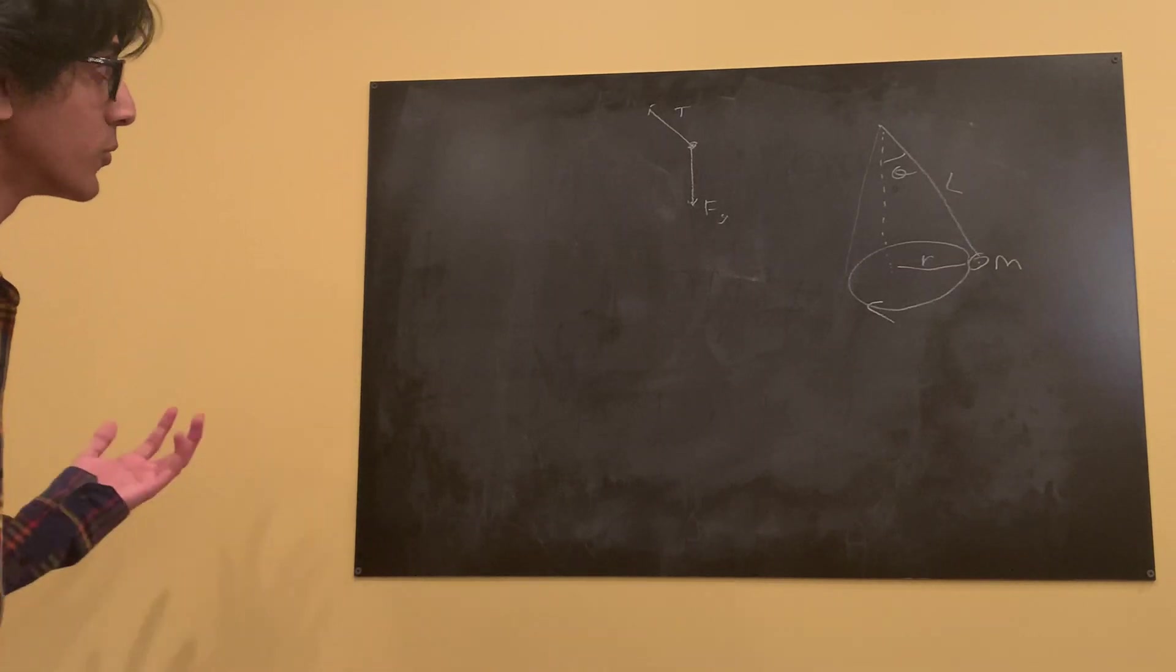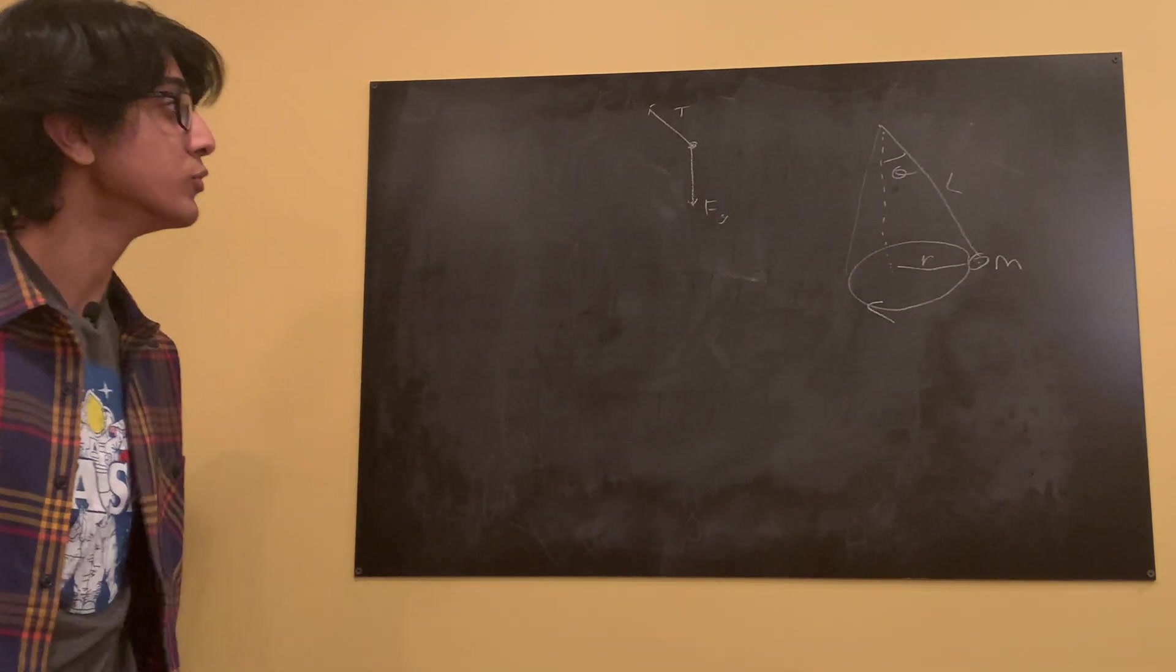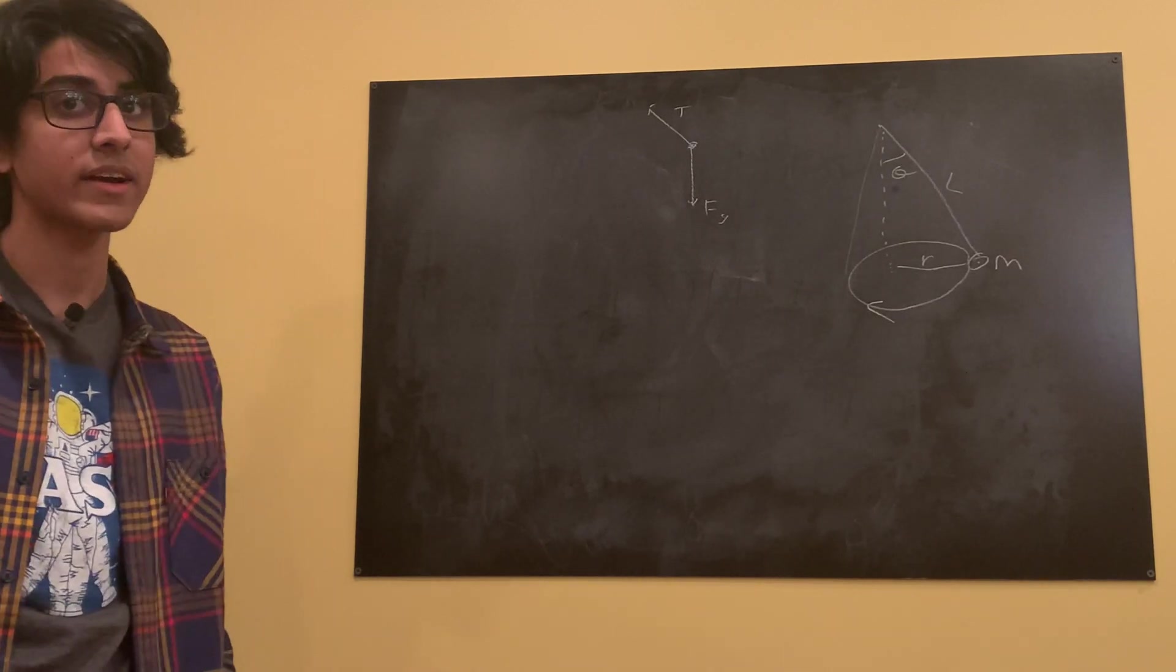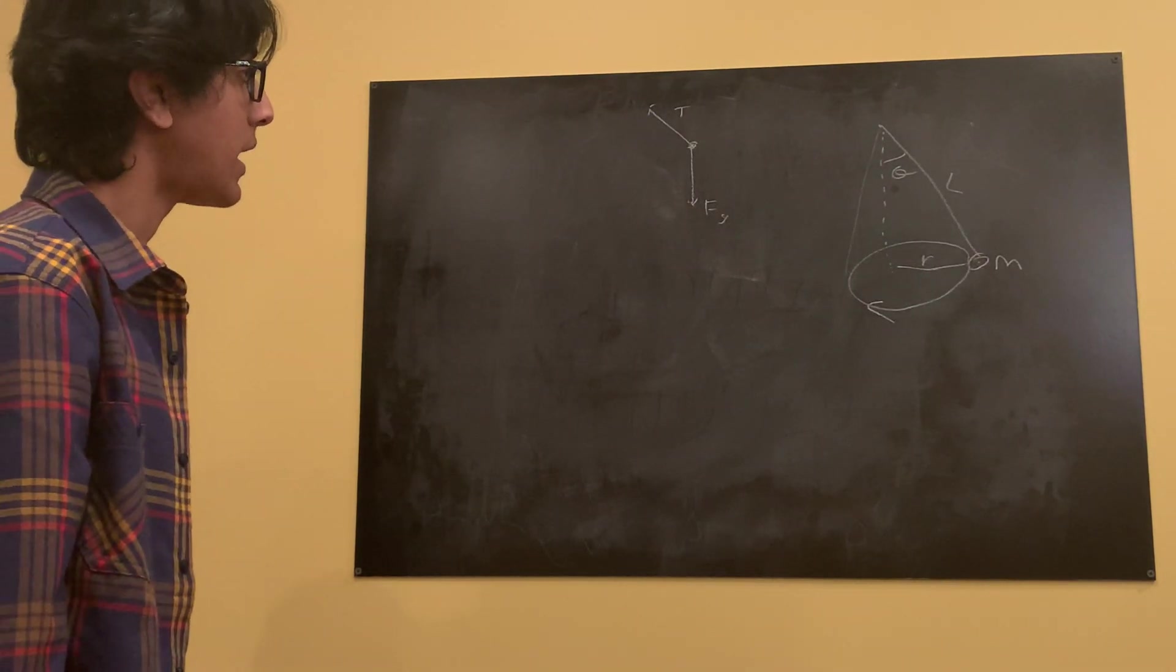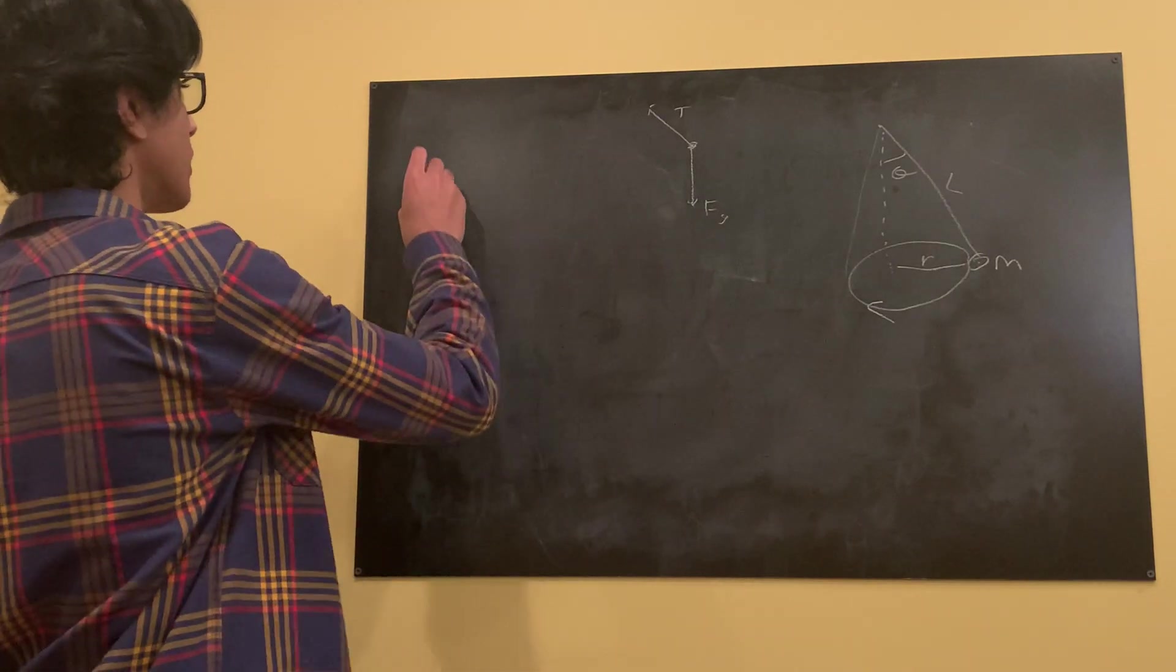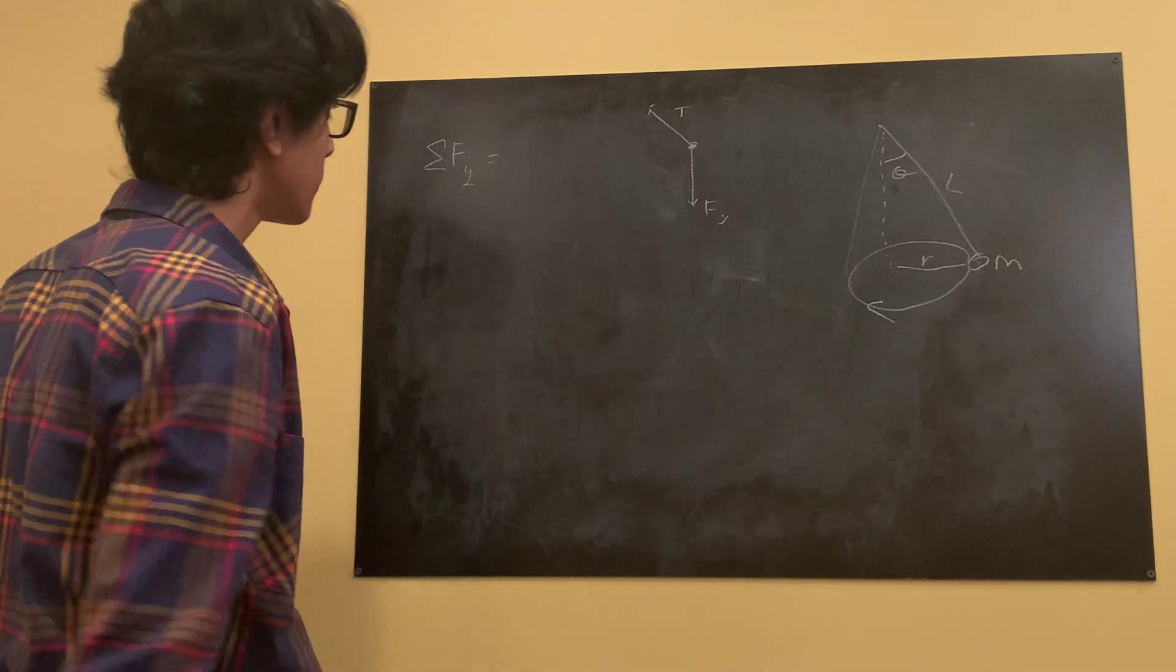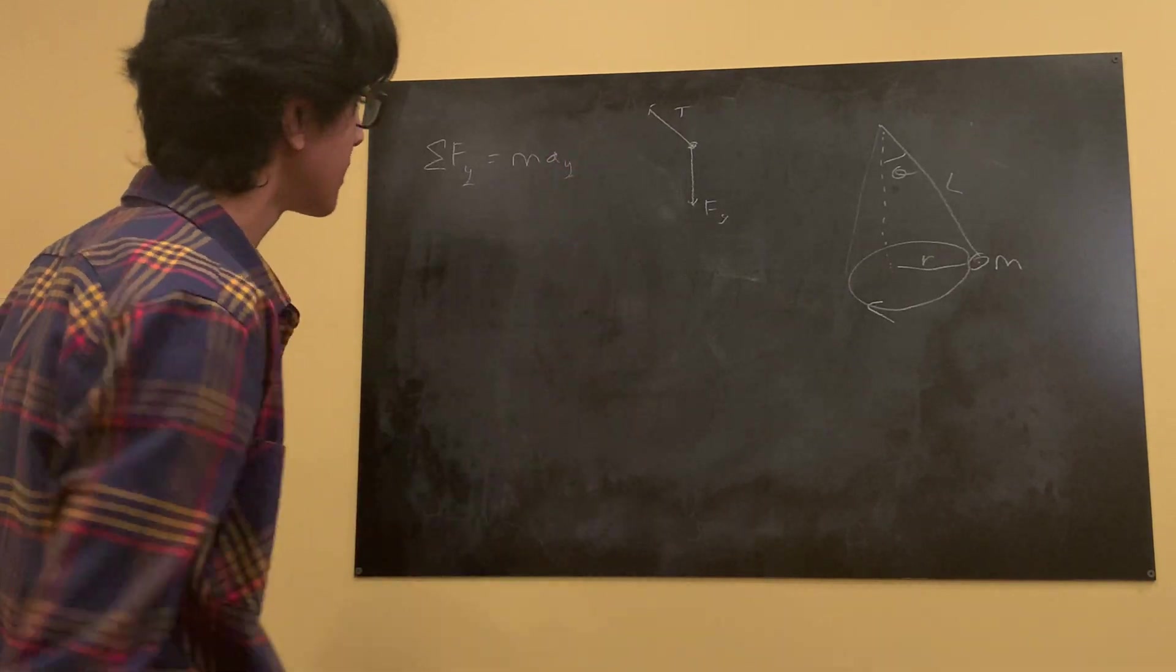Alright, so we have these forces at odd angles. So the best thing to do is to sum these forces in different planes, in terms of the x-axis and the y-axis, so vertical and horizontal. So let's start by summing our forces in the vertical direction, since that one's actually going to be easier, as you'll see. So the summation of the forces in the y-direction is equal to ma, the acceleration in the y-direction.